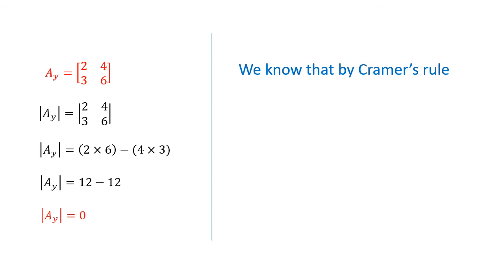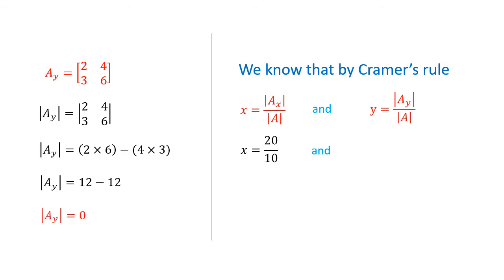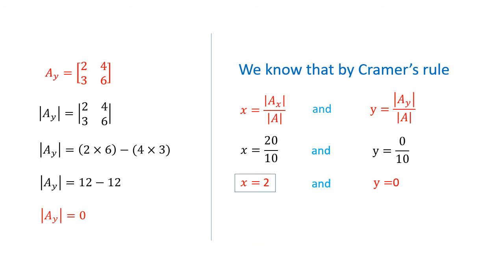By Cramer's rule, x equals the determinant of A_X over the determinant of A, and y equals the determinant of A_Y over the determinant of A. Putting values, x equals 20 divided by 10 and y equals 0 divided by 10. After solving, x equals 2 and y equals 0. This is our solution.